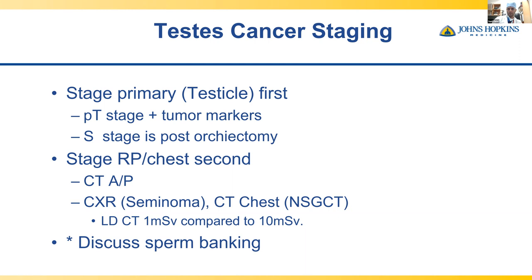With advances in CT scanners, low-dose CTs have very low radiation — around one millisievert compared to the standard ten millisievert dose. Some providers err on the side of getting a low-dose CT chest, abdomen, and pelvis, though body habitus can affect image quality. These are factors to consider when deciding whether to pan-scan the patient.